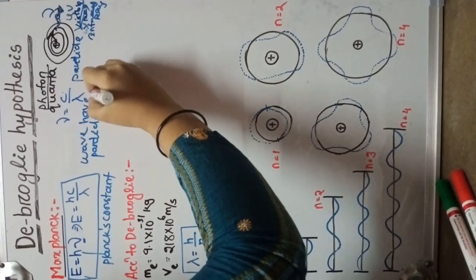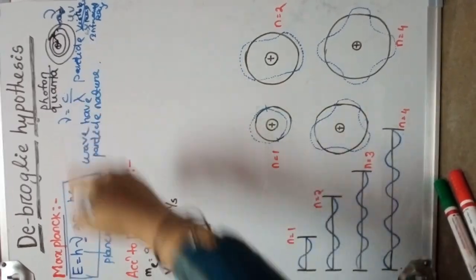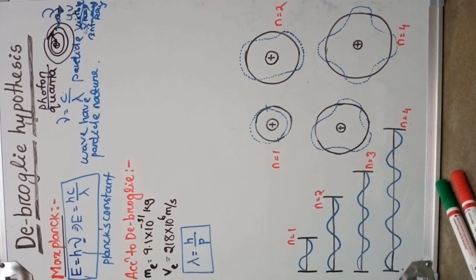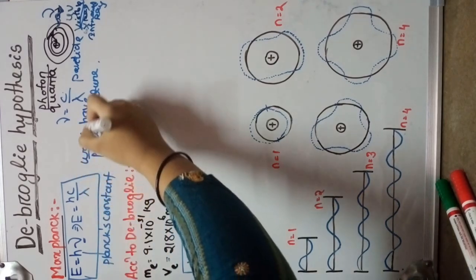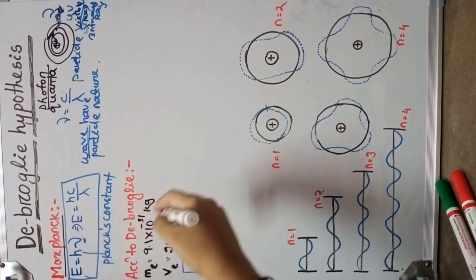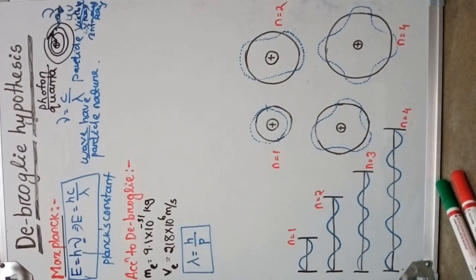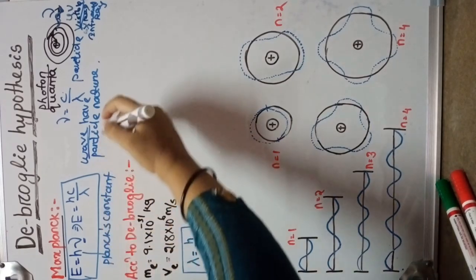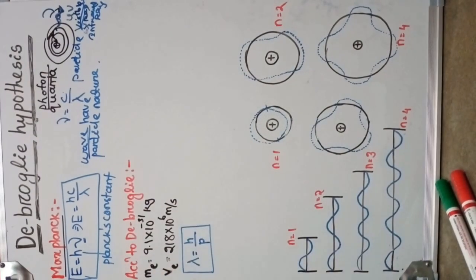On the basis of this concept, de Broglie put forward the idea that if a wave has particle nature, then an electron — which exhibits particle nature — should also have wave nature. In Bohr's atomic model, we discussed that electrons have particle nature. So de Broglie predicted that the particle nature of the electron is associated with wave nature.